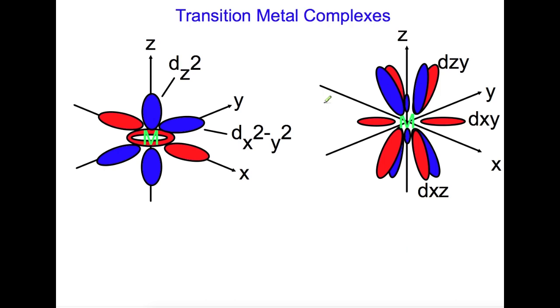When you have a transition metal on its own, all five of the d orbitals are degenerate. I've shown the d orbitals here in two separate groups so that we can explain what happens when we then put this into a complex.